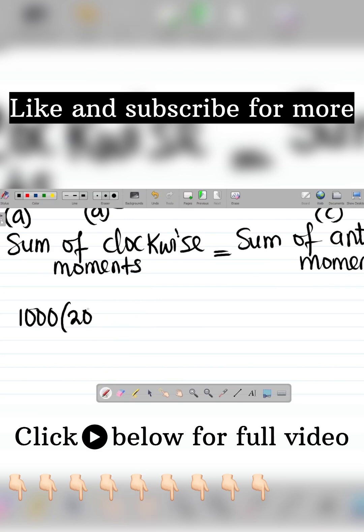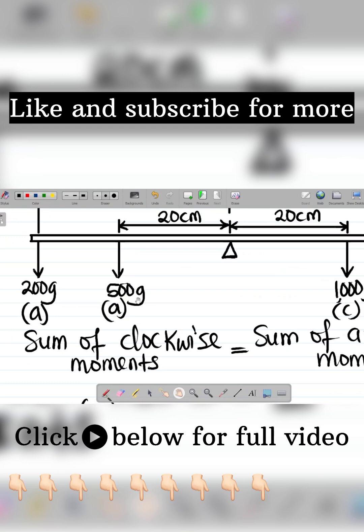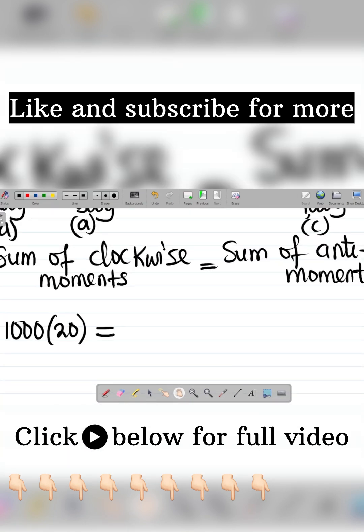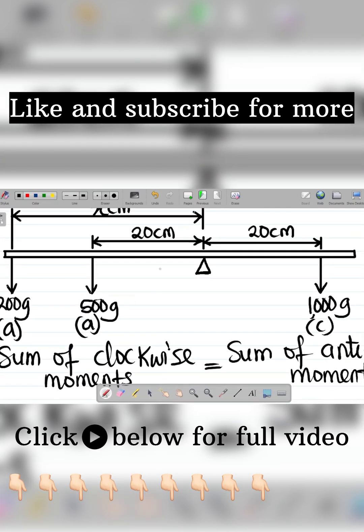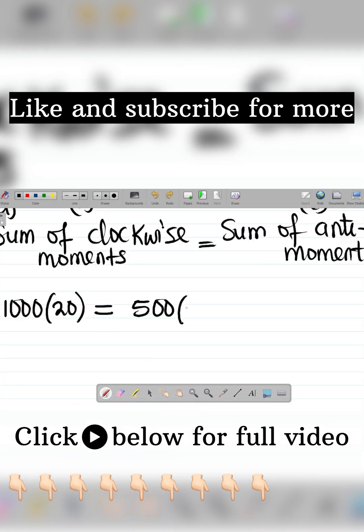1000 into 20, that's the clockwise, is equal to... For anti-clockwise, the first thing we have here is 500 grams. The distance between the 500 gram mass to the fulcrum—that's this part here—is simply 20 cm, so 500 times 20.